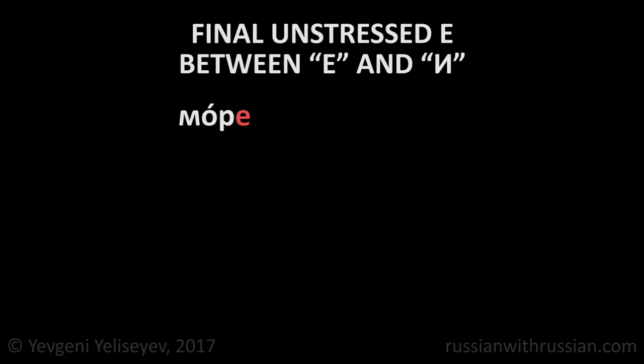It remains only to discuss the pronunciation of the final unstressed Е. In the final position, unstressed Е specifies a sound between Е and И, or a very closed Е. Examples: МОРЕ, ПЛАТЬЕ, УСЛОВИЕ.